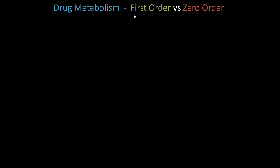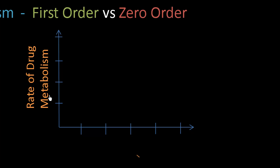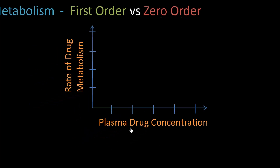The purpose of this lecture is for you to be able to differentiate first order kinetics from zero order kinetics, and the easiest way to do that is by looking at a graph. Pay attention to the axes: on the y-axis we're going to put the rate of drug metabolism, and we're going to see how that depends on the plasma drug concentration. Before we go any further, I need to implant a big-picture idea in your head.